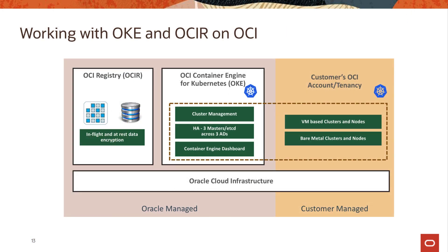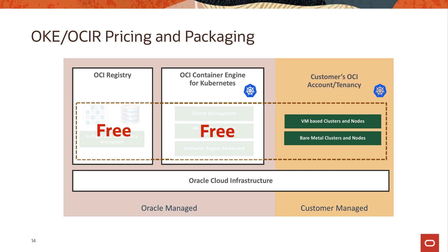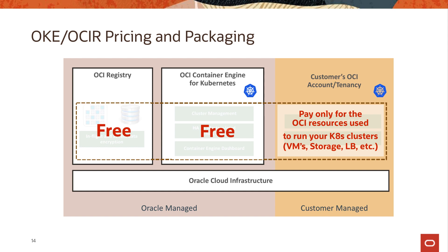Looking at what is maintained by the customer versus Oracle on the Kubernetes Engine on OCI: on Oracle's side, you have the OCI Registry Service tightly integrated with the engine, cluster management of master nodes, multiple etcd nodes across availability and fault domains, and the Container Engine dashboard — all maintained by Oracle. The customer only manages the worker nodes (the data plane), which can be VM-based or bare metal. From a pricing standpoint, all managed services provided by Oracle are free; customers only pay for the compute resources they use as worker nodes, plus any storage or additional services like load balancers.